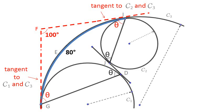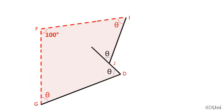Do we now have an idea of how to relate the unknown theta with known values in the problem? We have the pentagon GFIJD, in which the measures of its interior angles at G, D, J, and I are in terms of theta, and the measure of its interior angle at F is known — it is 100 degrees. To solve the problem, it suffices to work on that pentagon, where we can relate theta with 100 degrees.